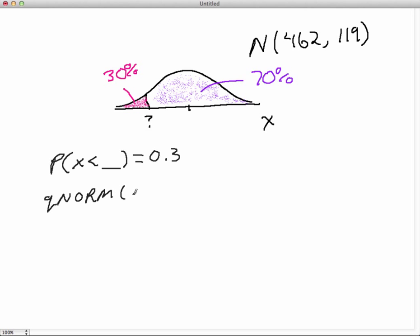Let's see how do you put in the area. Let's see the area was what? 0.3. And then put in the mean. Well, the mean of this distribution is 462. And the standard deviation is 119. So let's go type that in to R studio.